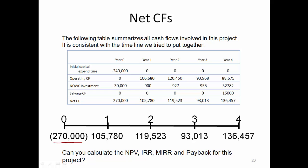For year four, we consider the operating cash flow, and you'll notice that year four's operating cash flow is lower than year one and year two. That is because of the accelerated depreciation in the first two years and the lower depreciation expense in years three and four. Also in year four, we recover all the investment in net operating working capital, giving a positive $32,782, plus the after-tax salvage cash flow of $15,000. Adding these three numbers for year four, the total cash flow is $136,457. Now we have a complete timeline. Can you calculate the NPV, IRR, modified IRR, and payback for this project?